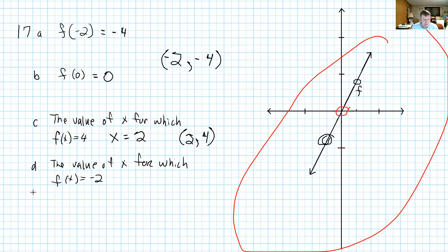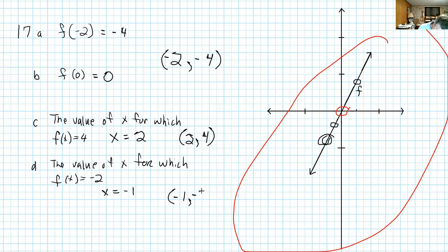Then it says the value of x for which f of x is negative 2. That's down here, and that would be when x is negative 1. So x equals negative 1, and that corresponds to the ordered pair negative 1, negative 2.